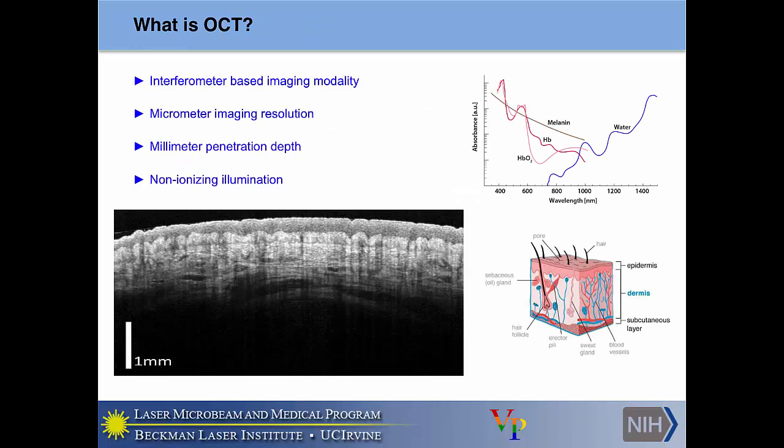What is OCT? OCT is an interferometric imaging modality capable of providing cross-sectional tomographic slices of tissue in vivo. It provides micrometer imaging resolution, typically on the range of about 5 to 10 micrometers, and can provide millimeter penetration depth — usually 1 to 2 millimeters for scattering tissue. For less scattering tissue such as the eye, it can reach up to 1 to 2 centimeters. OCT uses non-ionizing illumination, which makes it safe to use in vivo and in situ.